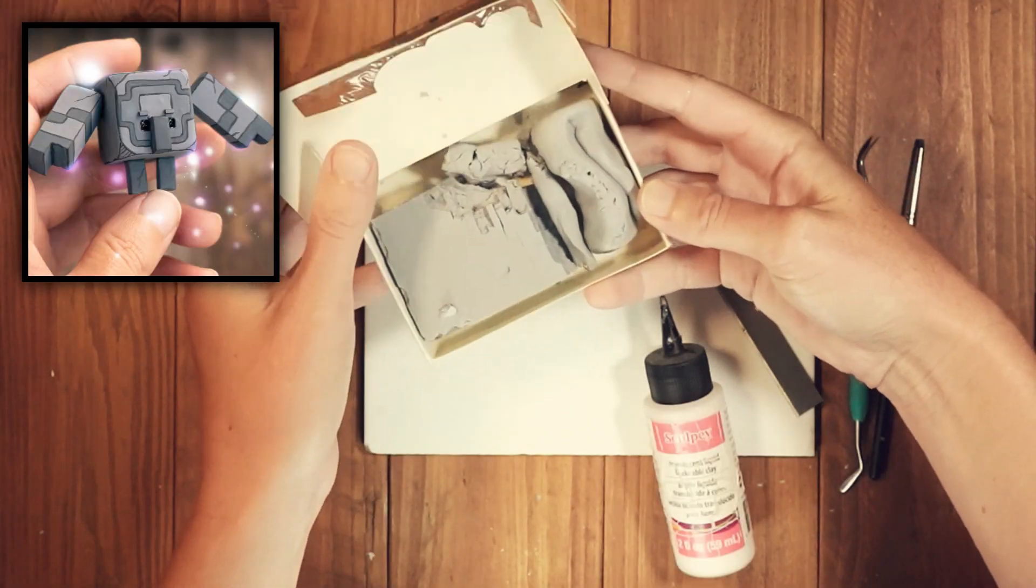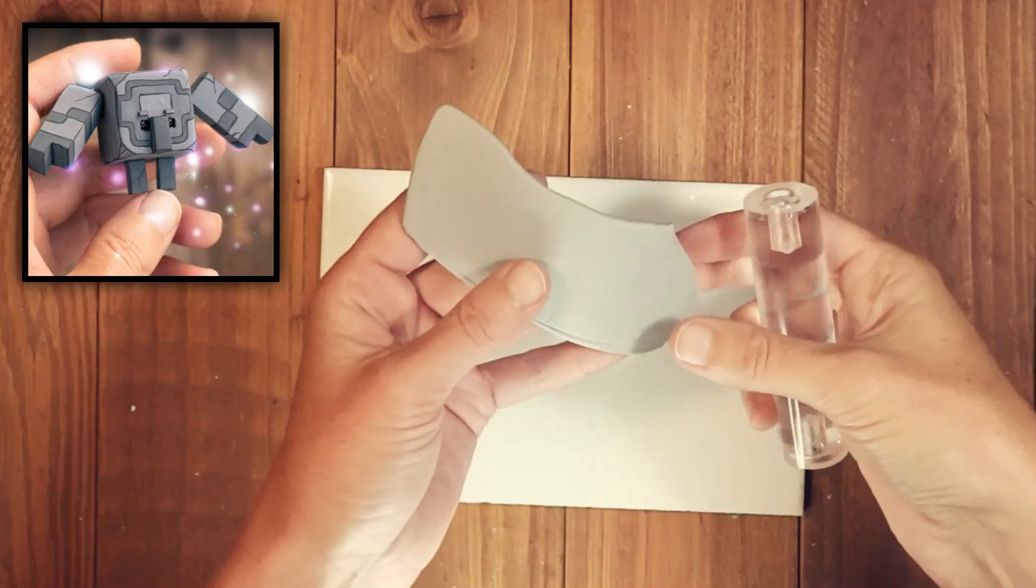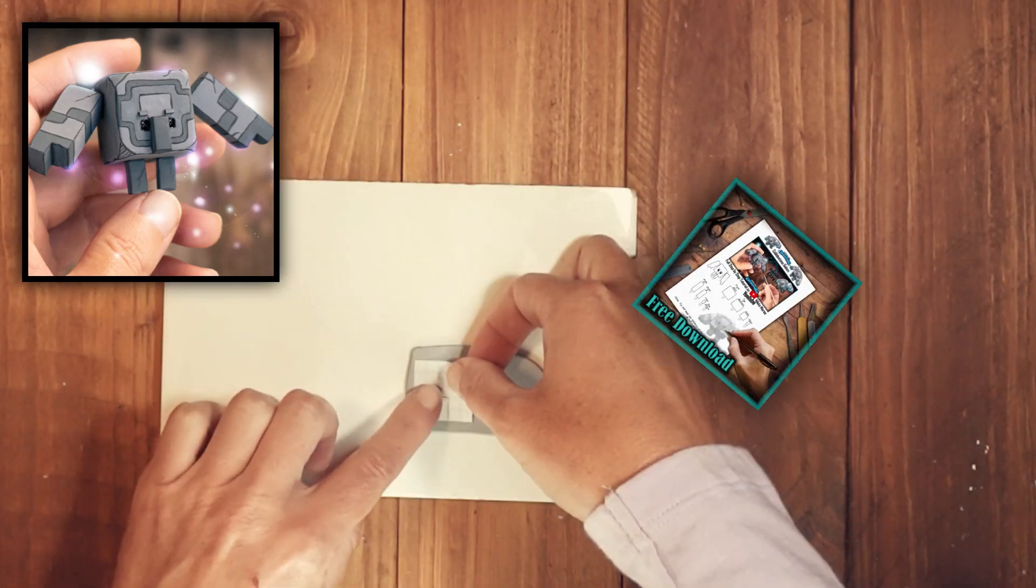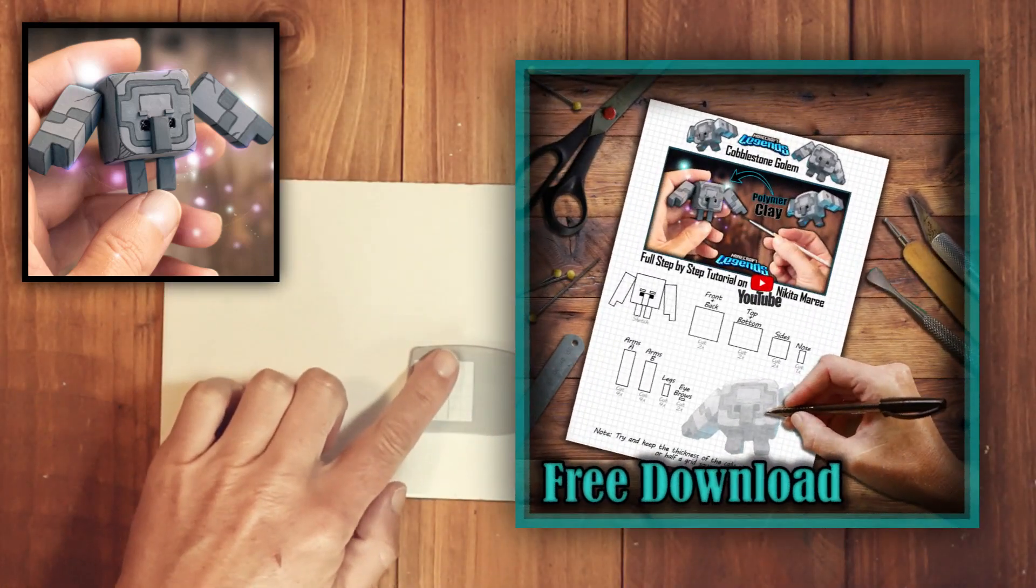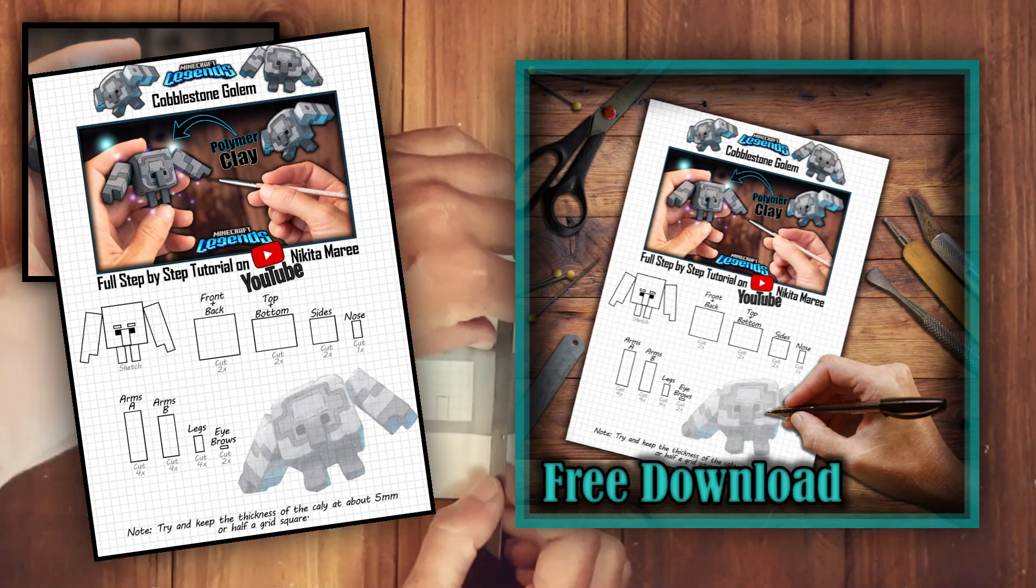I'm sculpting with polymer clay. Tools and materials are listed below. Roll out an even sheet. I'll be using grid paper to keep my measurements to scale. There is a free downloadable file with all the measurements linked below.